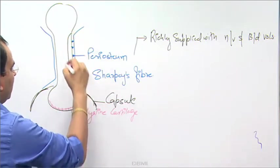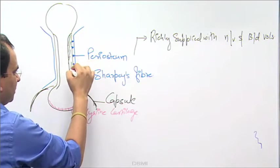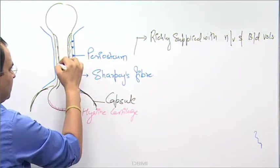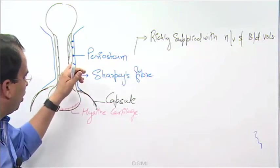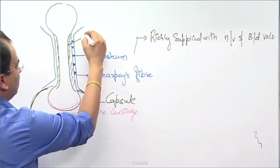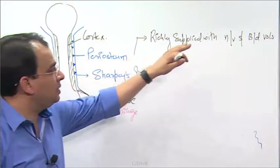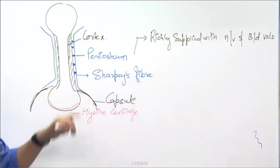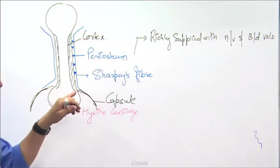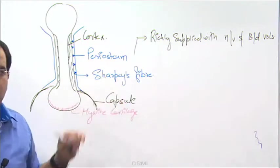If this is the cortex over here and you are looking at the medullary cavity inside, this is the cortex. A part of the cortex is supplied by the blood vessels of the periosteum and periosteum is not present on the articular surfaces. Periosteum is continuing with the capsule.